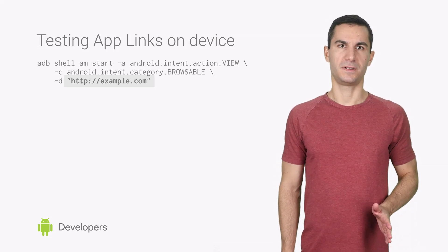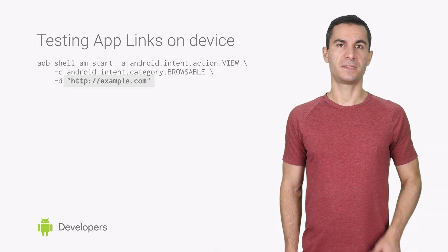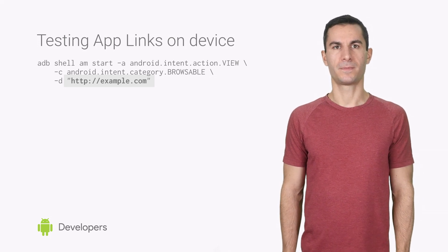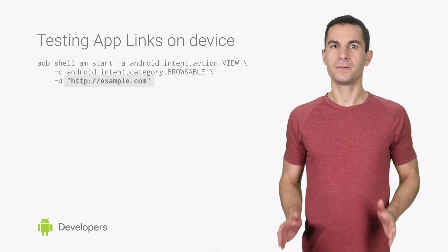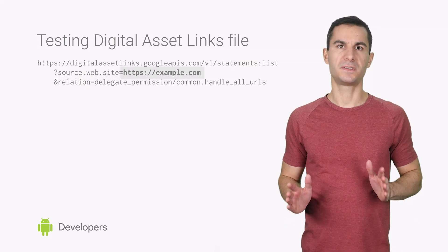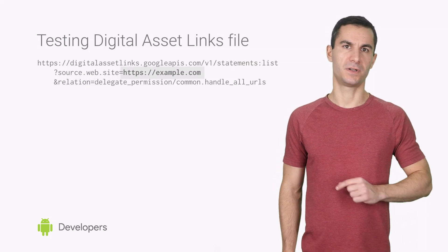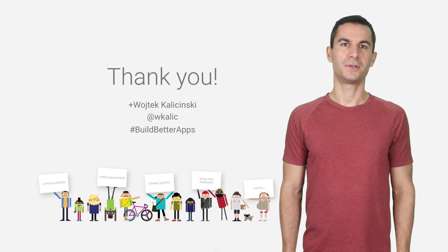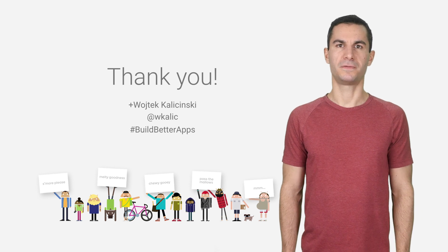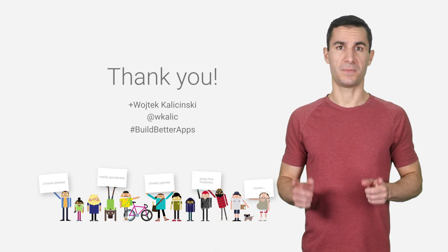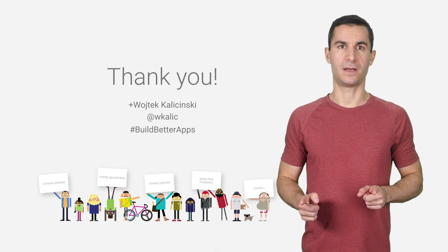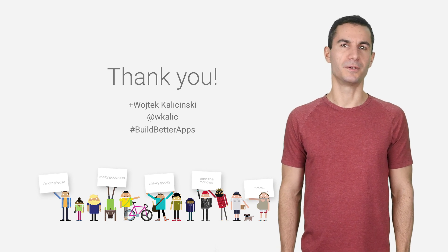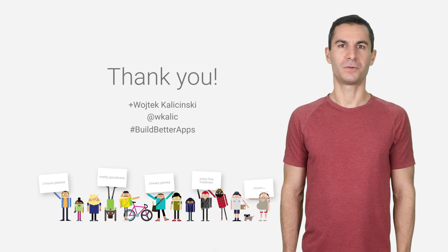If you do see a disambiguation dialog, that means the package installer wasn't able to verify your domain. You can use the Digital Asset Links tool to see if your JSON file is reachable and parsed correctly. With these simple steps, you can make life easier for your users. Go and implement App Links now, or check out the other great features we're introducing in Android Marshmallow. Thanks for watching.